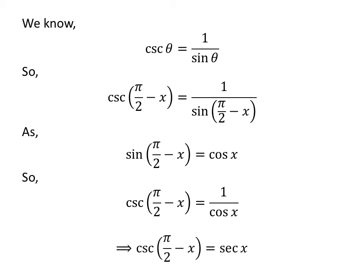We know 1 over cos x equals sec x. Therefore, cosec(π/2 - x) equals sec x.